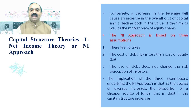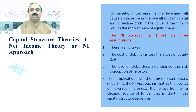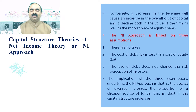The net income approach is based on three assumptions. One, there are no taxes. Two, the cost of debt, shortly known as KI, is less than the cost of equity, shortly known as KE. Three, the use of debt does not change the risk perception of investors.